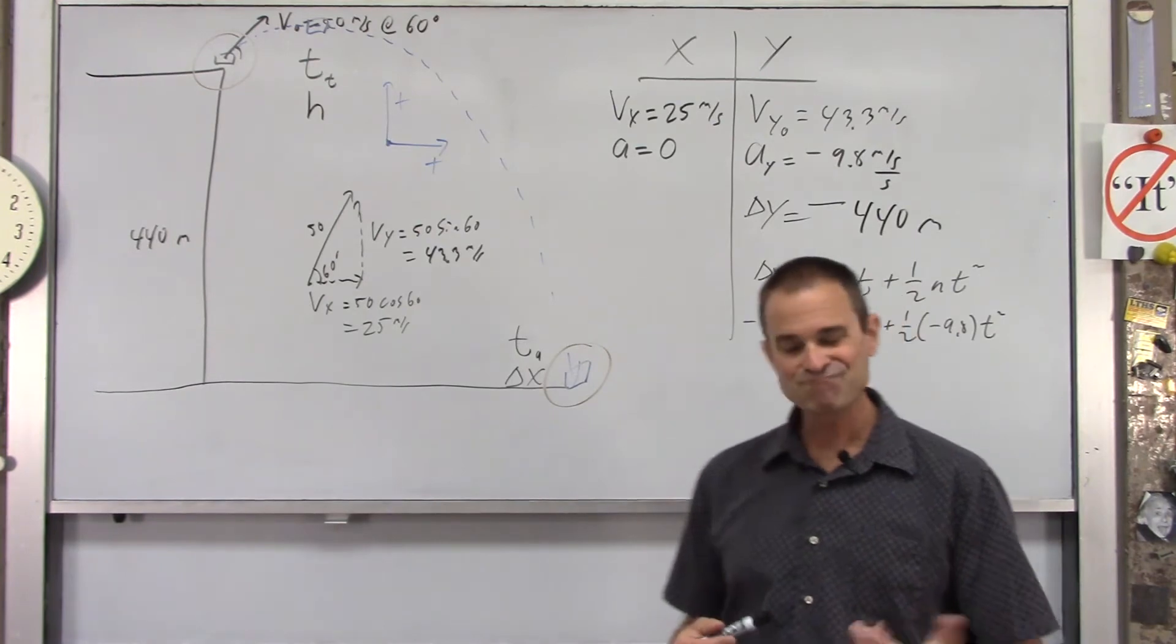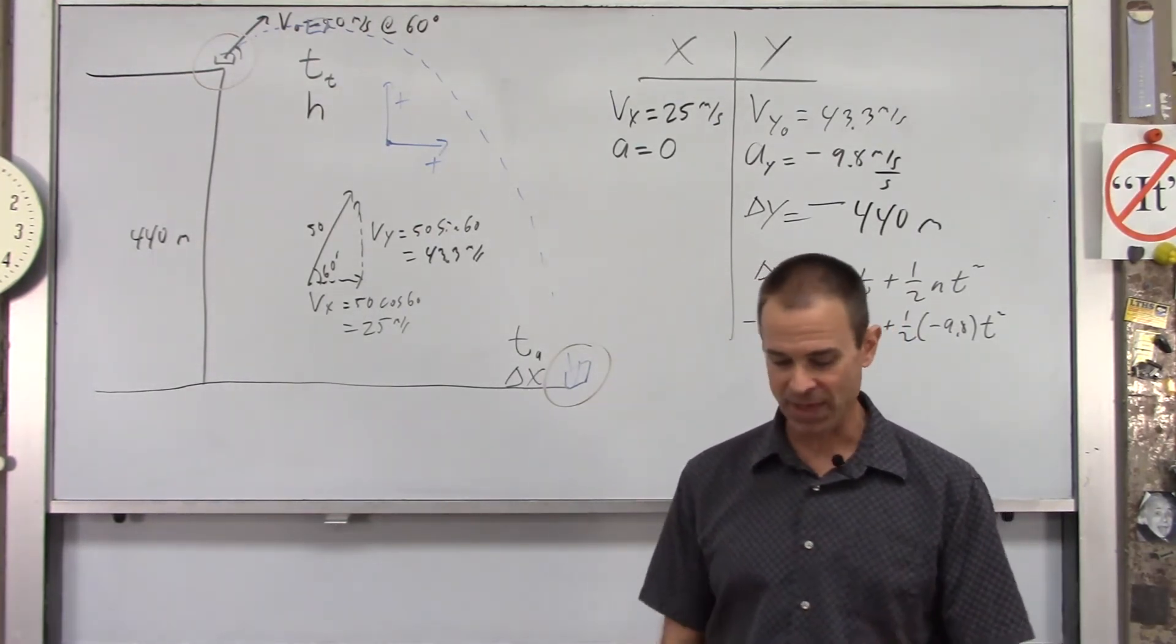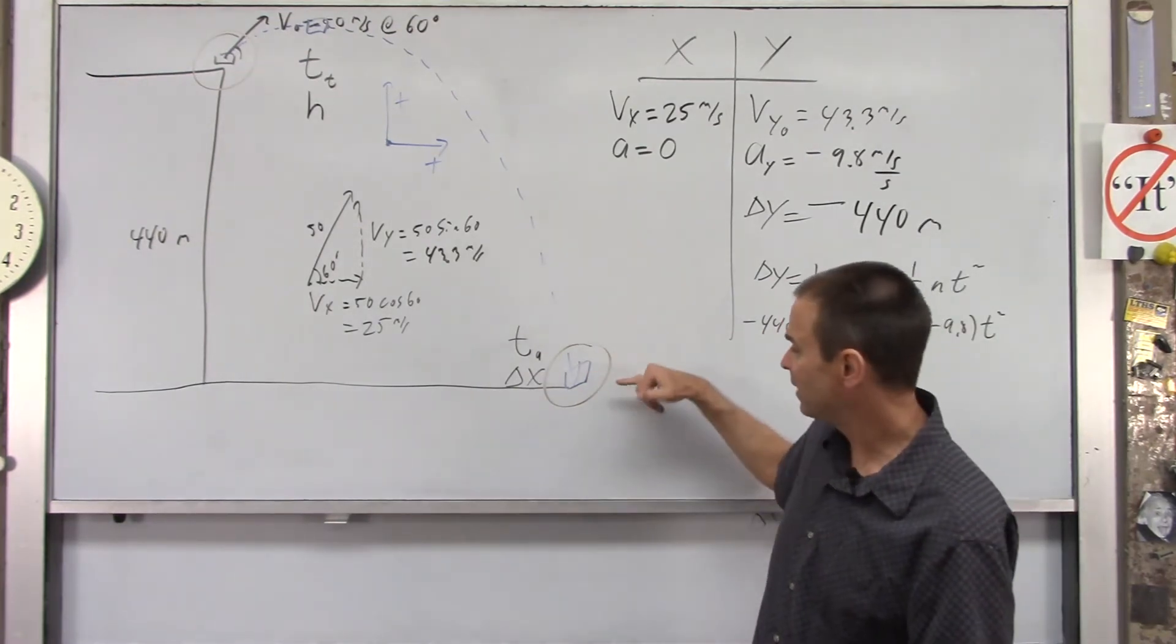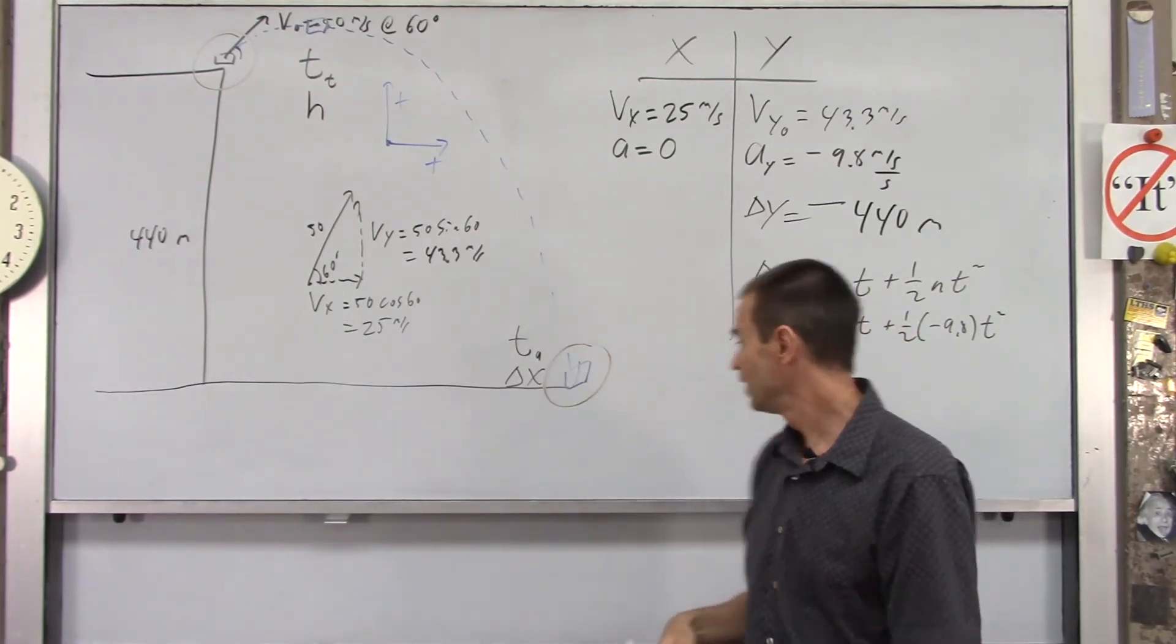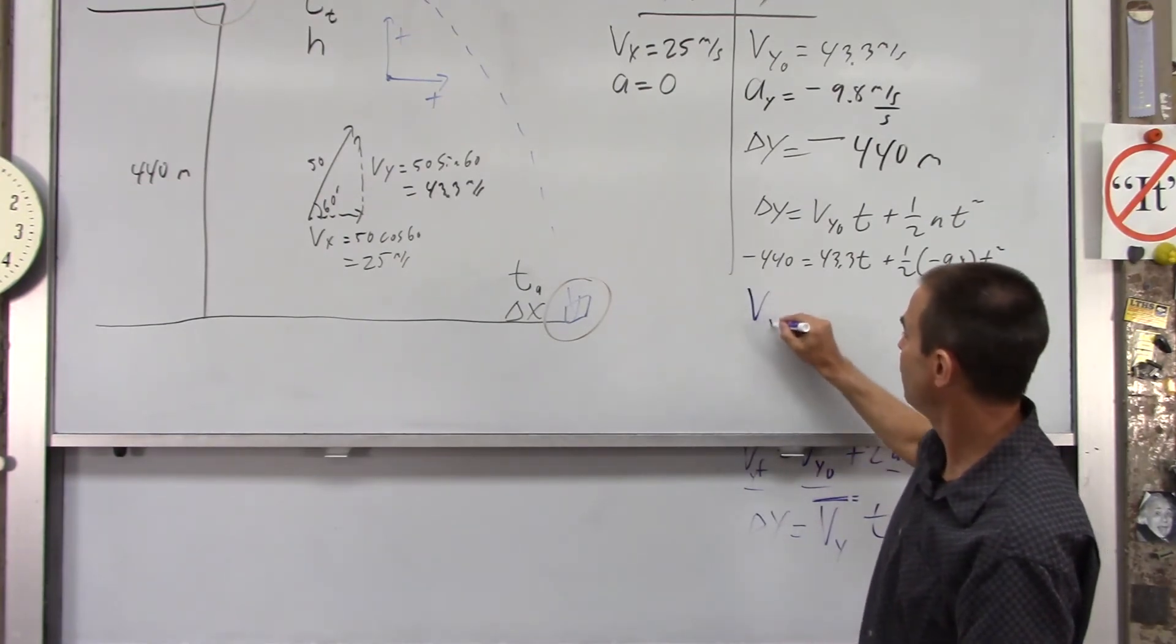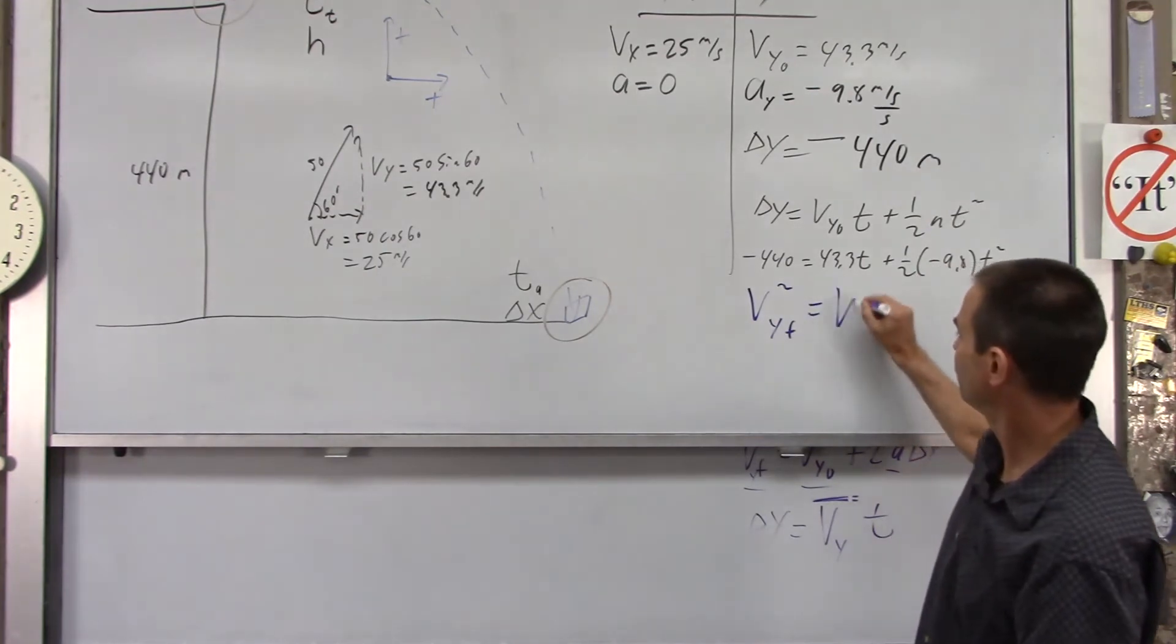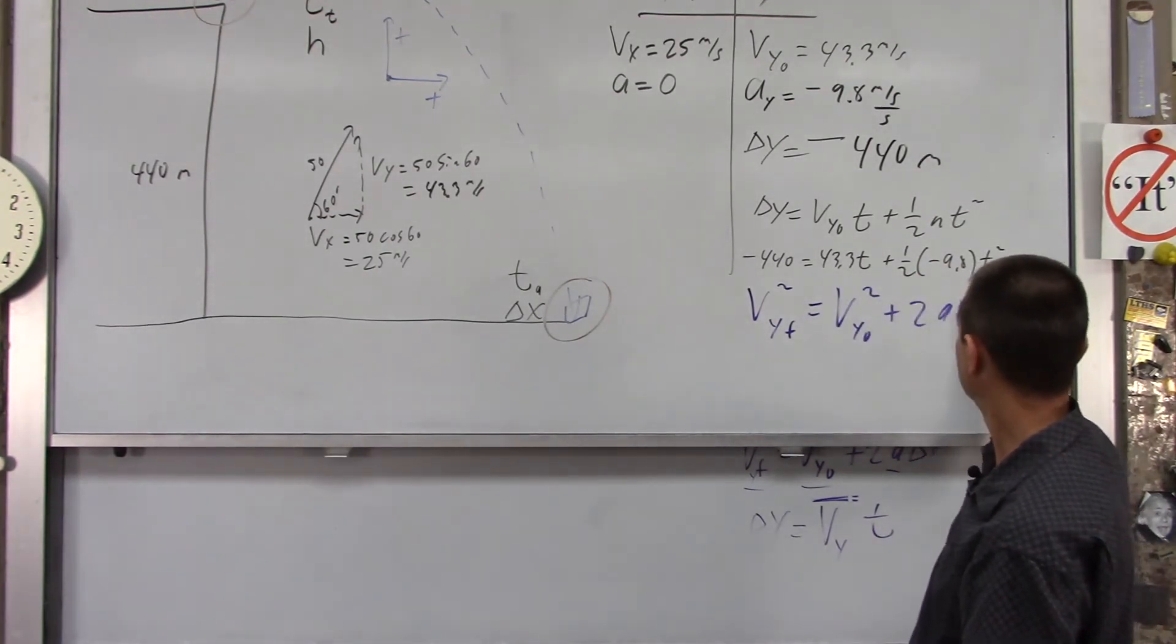However, if you decide, you know what? I don't want to use the quadratic formula. There is a way around that. What we can do is, even though it doesn't ask for it, you can find vy final. How quickly downward is this thing traveling? So, let's do that. In order to do that, I'm going to use vy final squared equals vy0 squared plus 2a delta y.